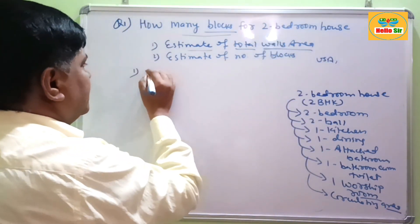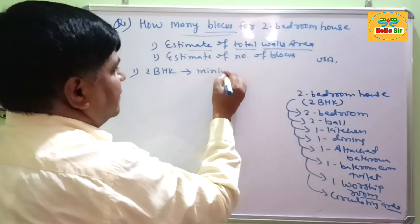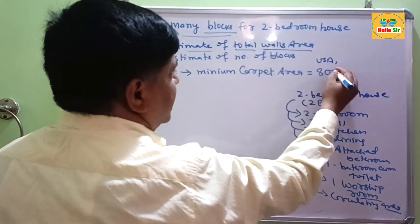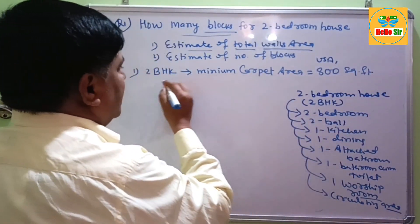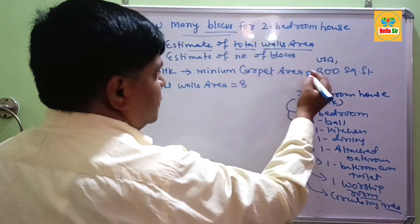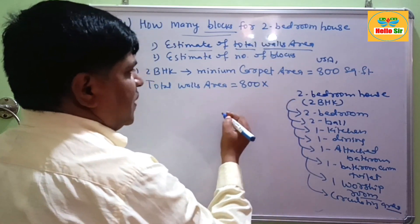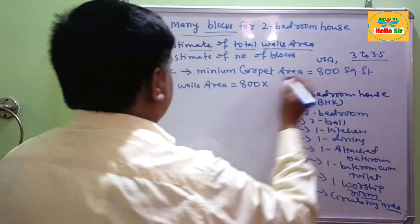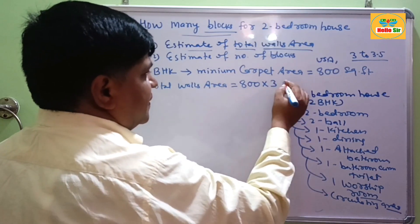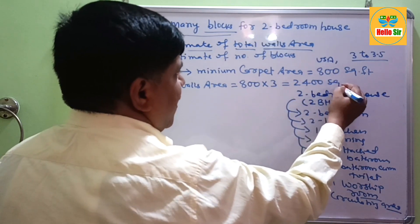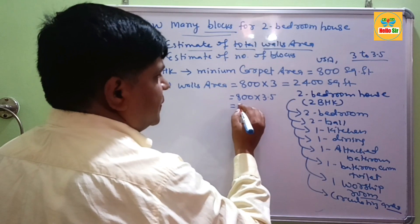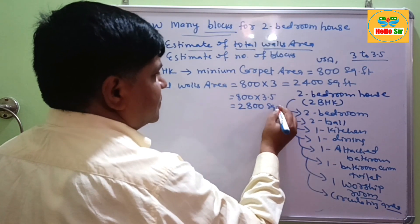First, how do we estimate the total wall area of a two-bedroom house? The minimum carpet area required to build a two-bedroom house is about 800 square feet. There is a thumb rule: multiply the total carpet area by a factor of 3 to 3.5 to calculate the total wall area. So 800 × 3 = 2,400 square feet, and 800 × 3.5 = 2,800 square feet.